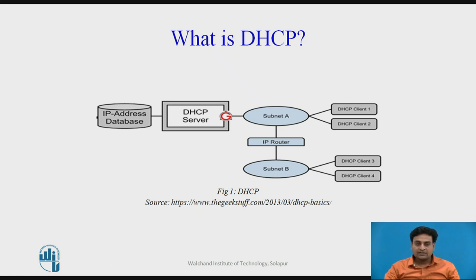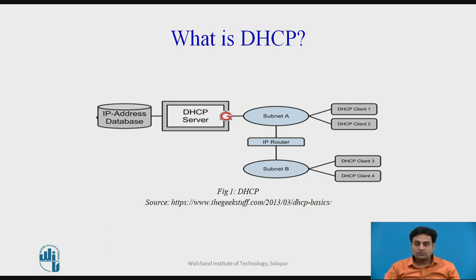DHCP is an Internet Engineering Task Force standard based on Bootstrap Protocol. Before DHCP became a famous protocol for host configuration, some other protocols were used for this purpose. At the beginning of the Internet era, a protocol called Reverse Address Resolution Protocol was designed to provide the IP address for a booted computer. RARP maps a physical address to an IP address; however, it can provide only one IP address, but a computer today needs additional information.